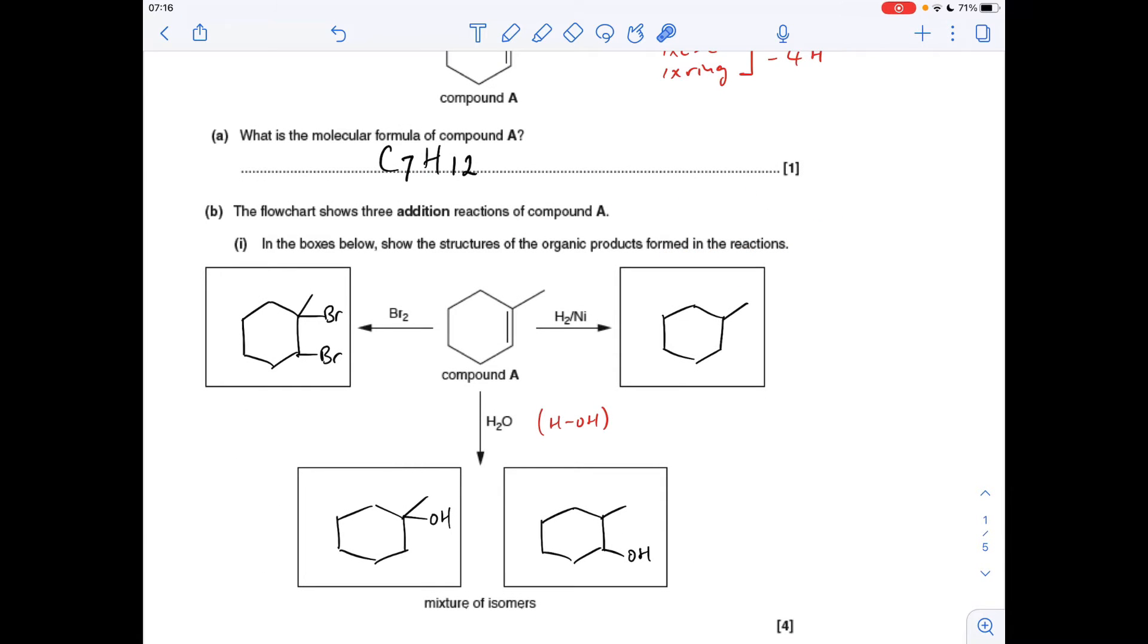Part B now, we've got to complete the flowchart. So obviously the double bond's going to react with the bromine, the hydrogen with the nickel catalyst and the H2O. So bromine first, the two bromine atoms will add across the double bond where that is, so that'll break open and the BRs go across it.